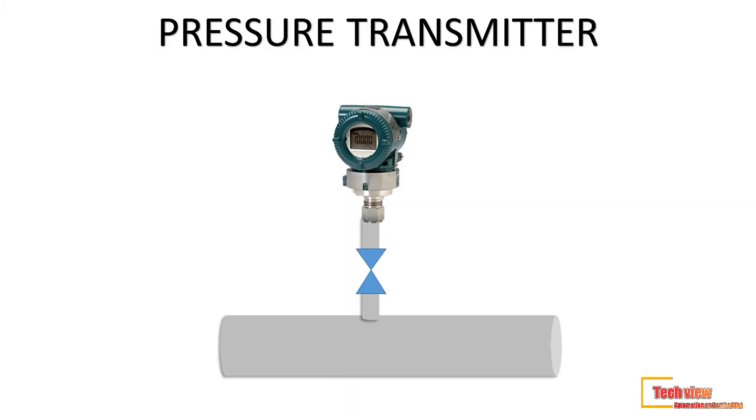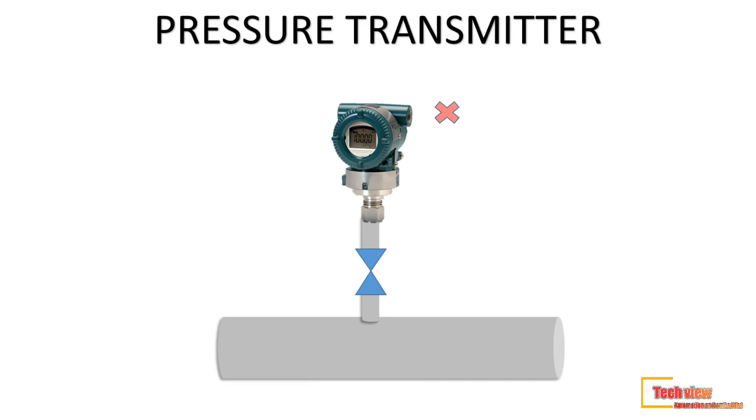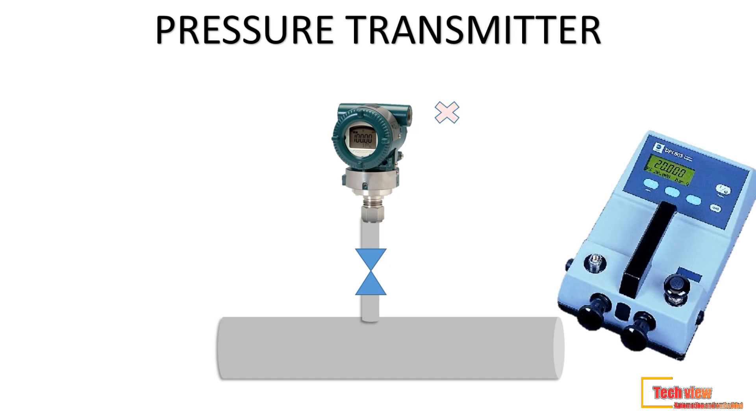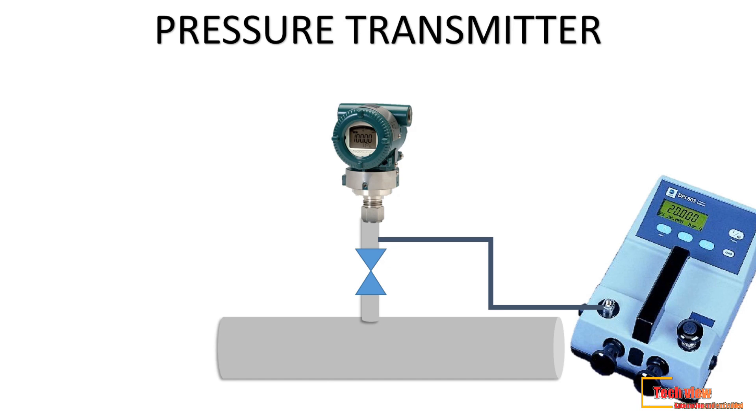In this lesson I will explain how the calibration is to be done for a pressure transmitter. For example, we have a pressure transmitter making problem in process and it's giving inaccurate reading. So we have to verify the transmitter performance. For that we have to inject the pressure to the sensor using a master calibrator and verify the output.